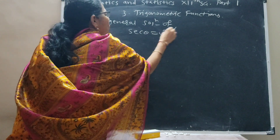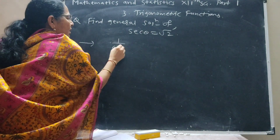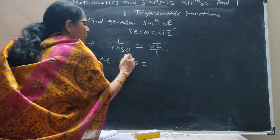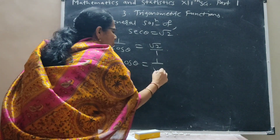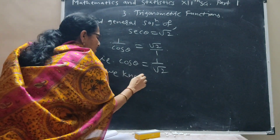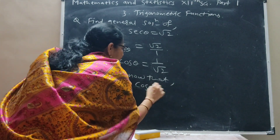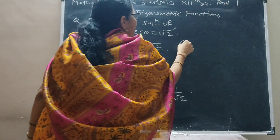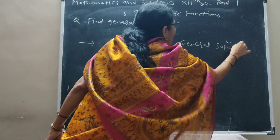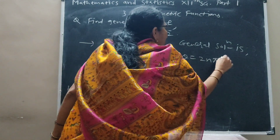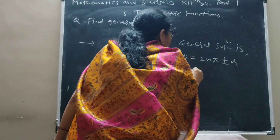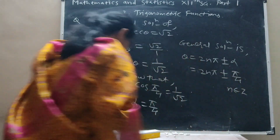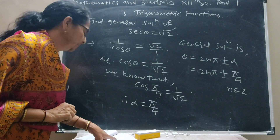Sec theta equal to root 2. We know that sec theta is equal to 1 upon cos theta, which equals root 2 upon 1. Therefore, cos theta is equal to 1 upon root 2. We know that cos of pi by 4 is equal to 1 upon root 2. Therefore, alpha is equal to pi by 4. The general solution is theta equal to 2n pi plus minus pi by 4, where n belongs to Z.